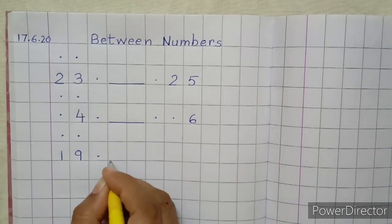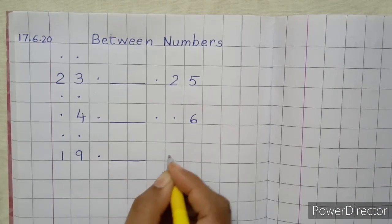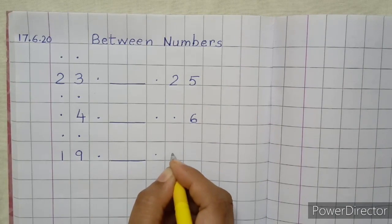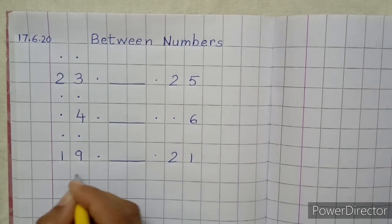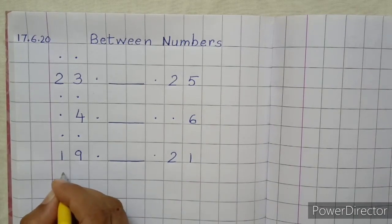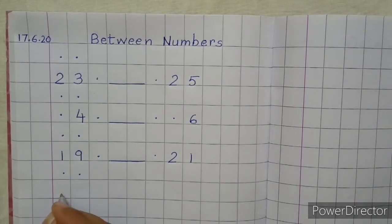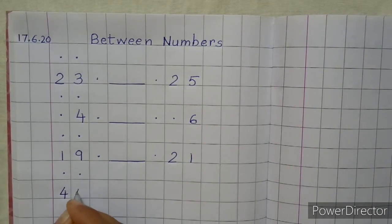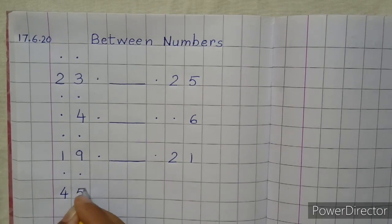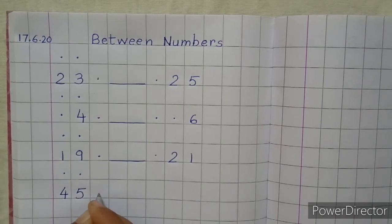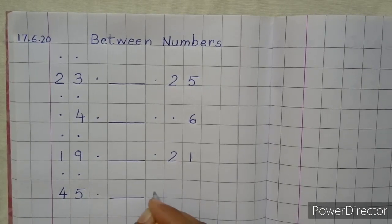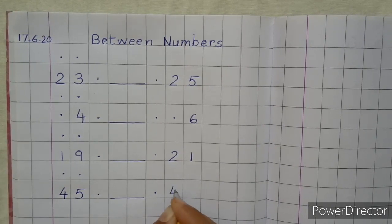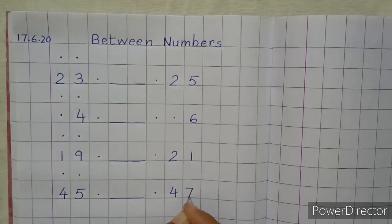Again, put two dots. Write nineteen. Dot. Dash in two boxes. Dot. Write twenty-one. Now, again put two dots. Below two dots, write down forty-five. Dot. Dash in two boxes. Dot. Write forty-seven.